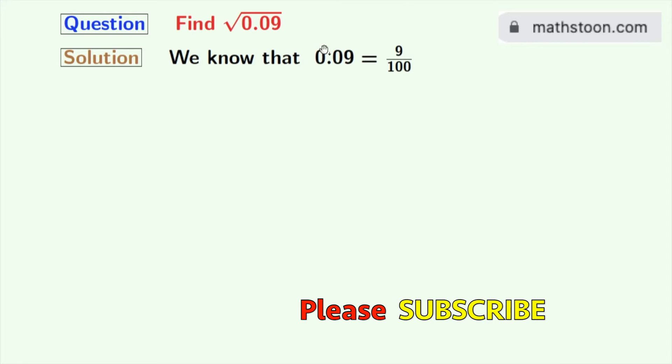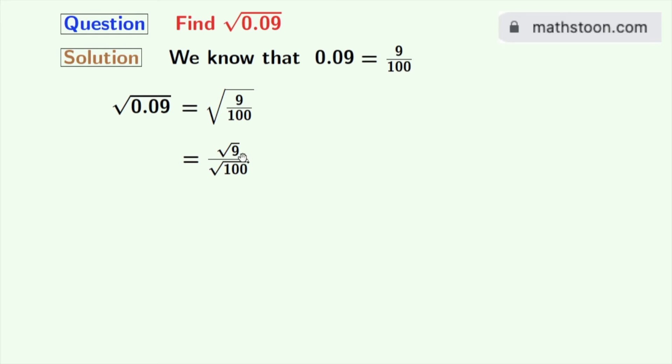Now we will take square root on both sides. Doing so, we get square root of 0.09 is equal to square root of 9 by 100. Now we can write this as square root of 9 by square root of 100.